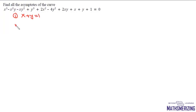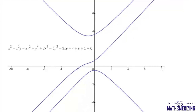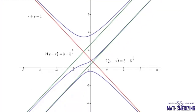This curve has three asymptotes: x + y = 1, y = x + (3 + √5)/2, and y = x + (3 - √5)/2. The graph has three branches, and plotting the asymptotes shows each branch approaching one of these lines.